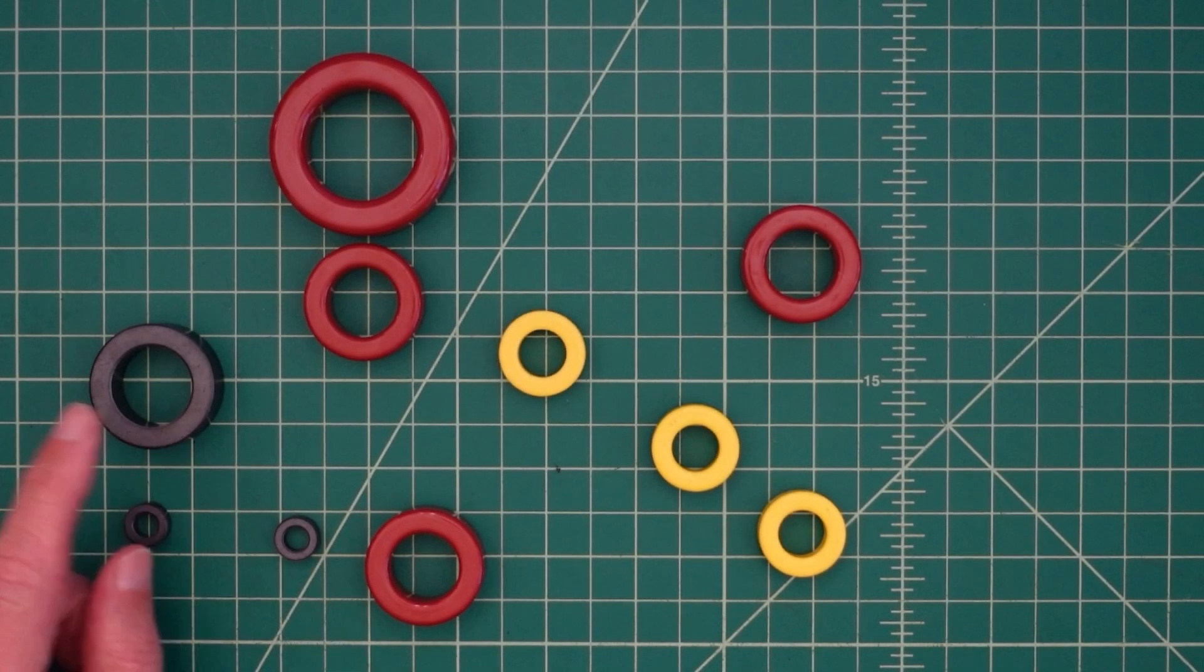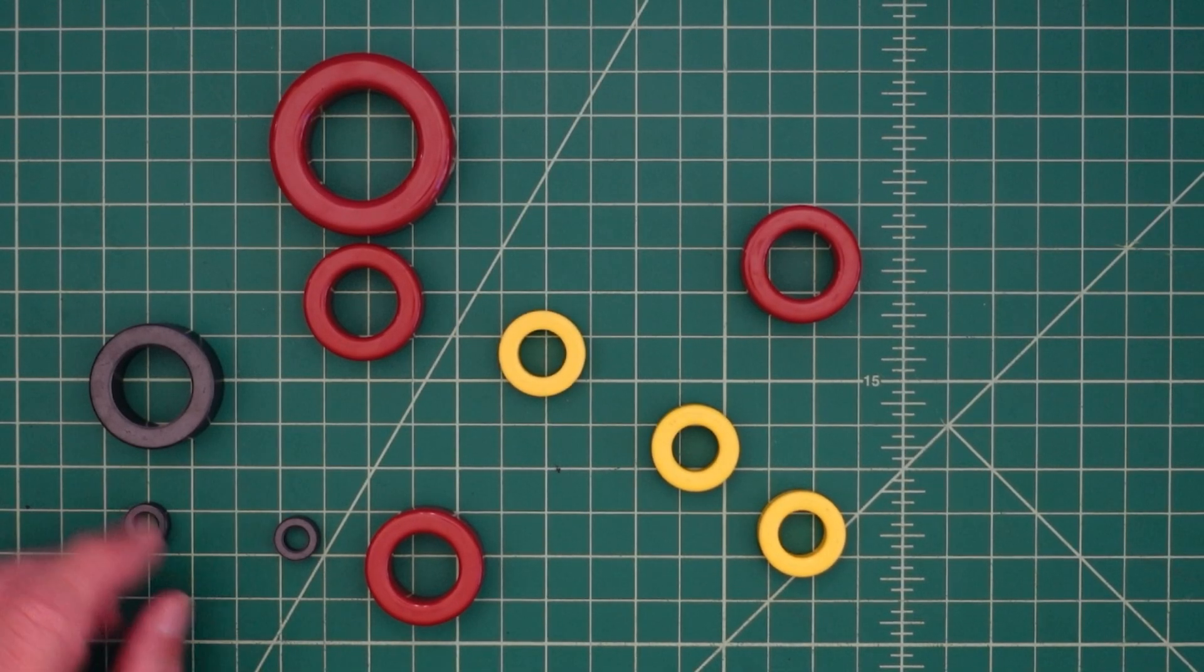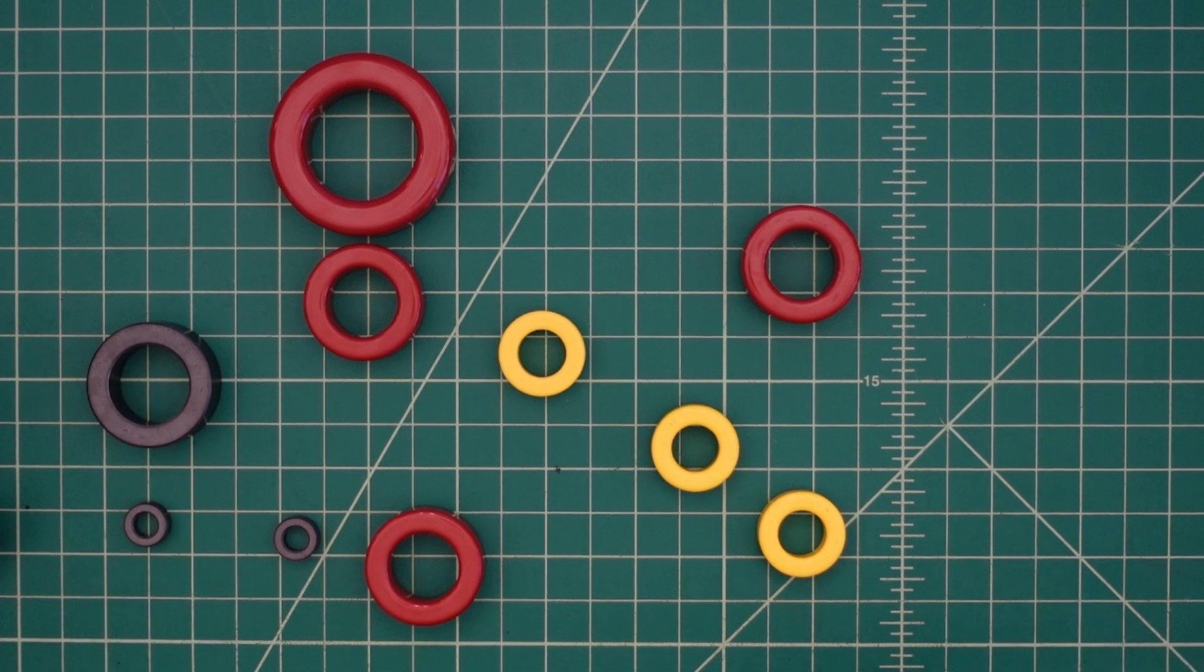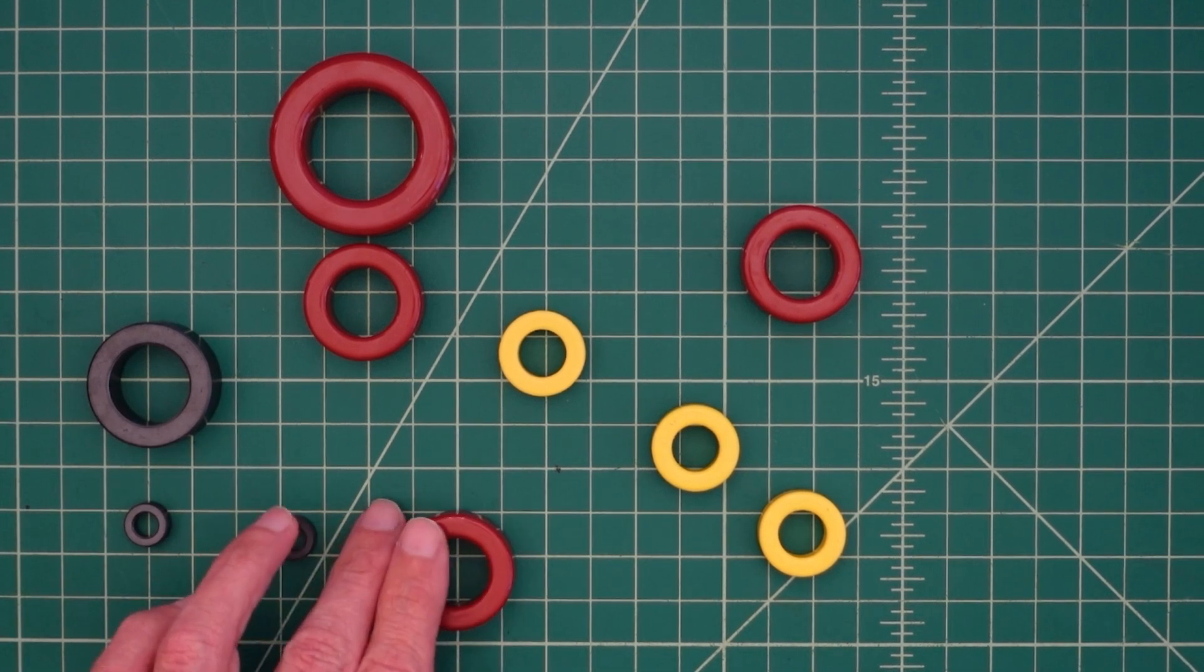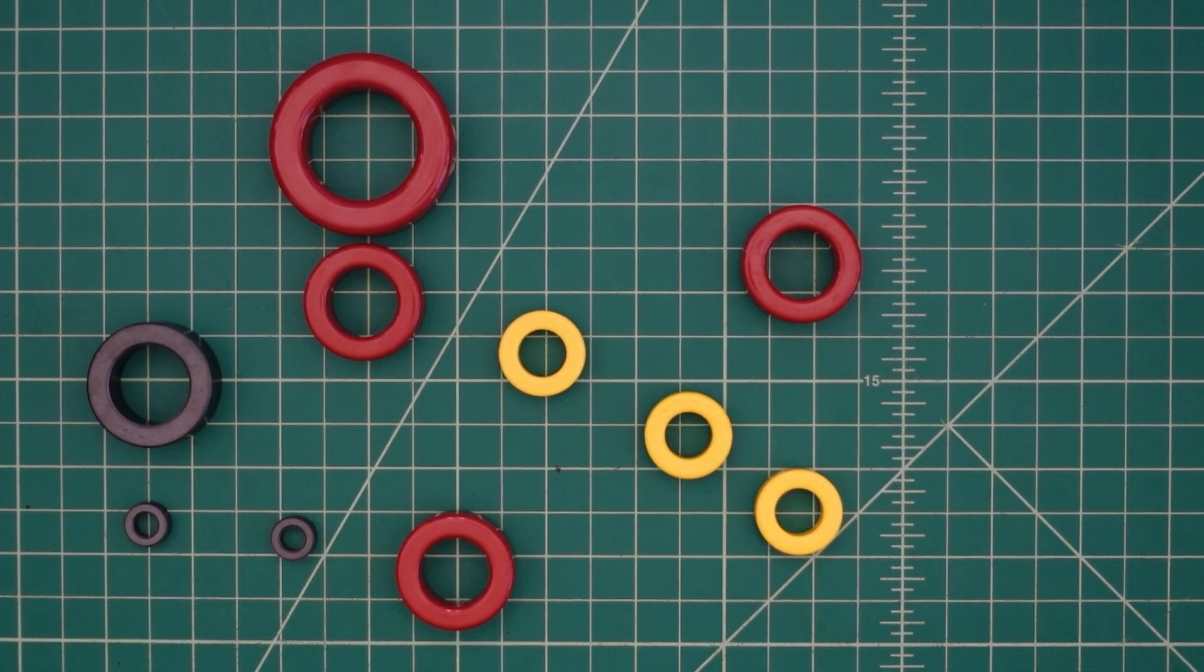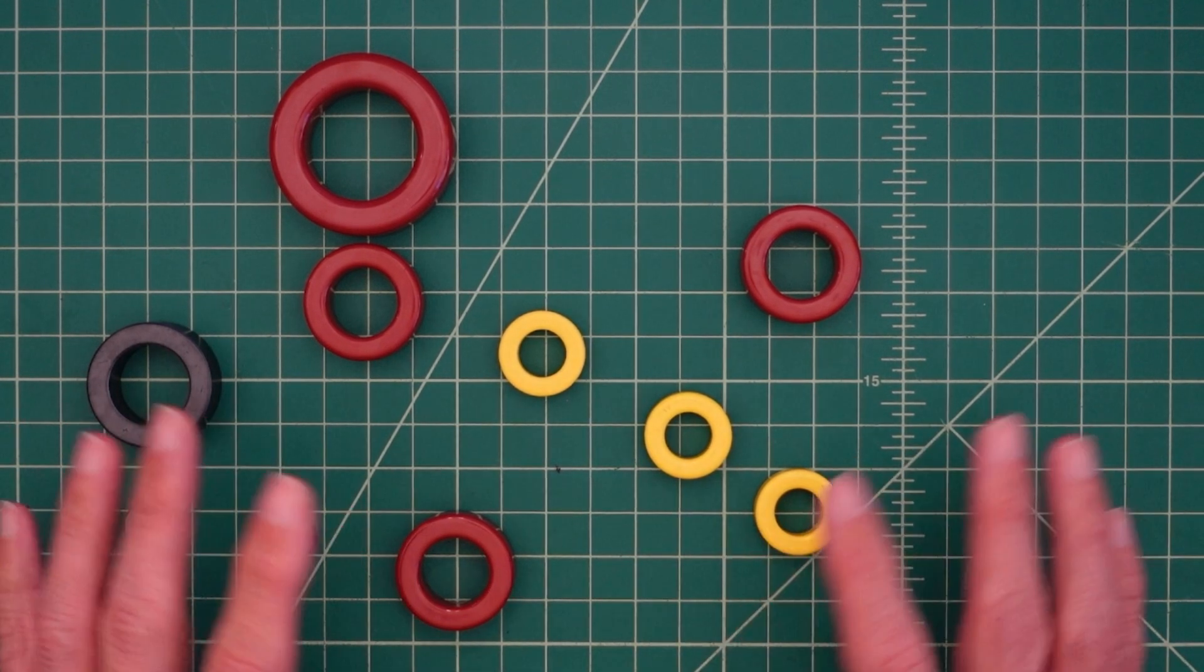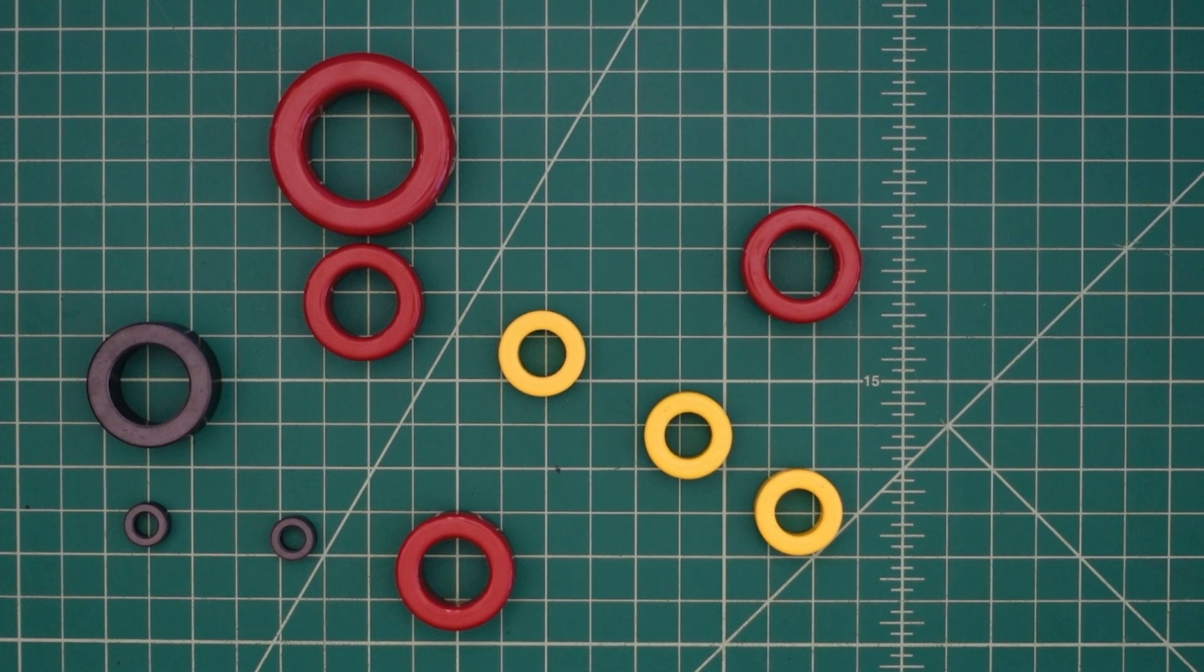You can see here we have many different types of toroids. These come in different mixes of different compounds. These red ones are powdered iron, and so are these yellow ones. These are ferrite cores. Now all of these cores behave differently, and they produce different amounts of induction when electricity is built in these magnetic fields.